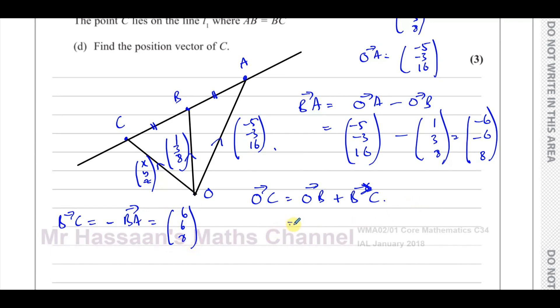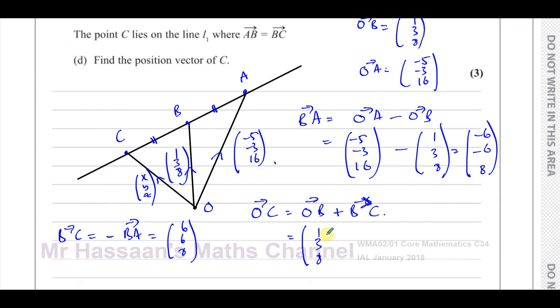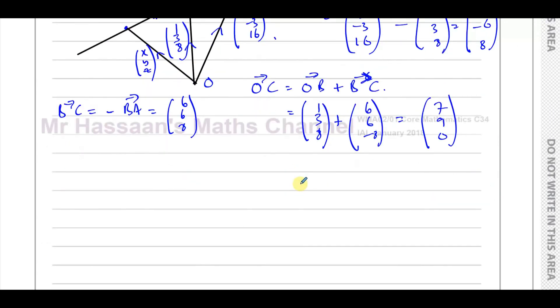So O to C is going to be O to B, which we already know. O to C equals 1, 3, 8, plus B to C, which is 6, 6, minus 8. What does that give us? 1 plus 6 is 7, 3 plus 6 is 9, and 8 plus minus 8 is 0. So that is the position vector of C.